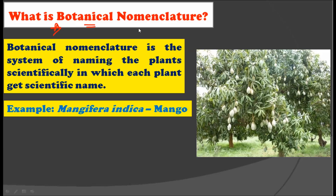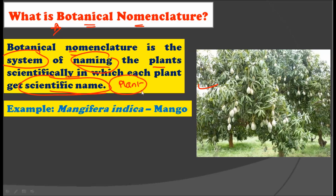What is the botanical nomenclature? Botanical nomenclature is the system of naming the plants scientifically in which each plant gets a scientific name. Botanical nomenclature primarily deals with the nomenclature of plants only. So the international code of botanical nomenclature shows the rules and regulations for the nomenclature of plants.